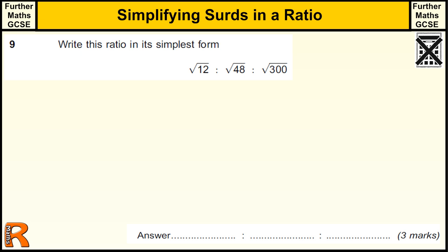Here we have a question of simplifying surds in a ratio. At the start of this question, you might be thinking, I'm not sure what to do here. But when you see surds, probably the best approach is to simplify them. So the square root of 12: